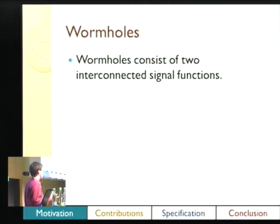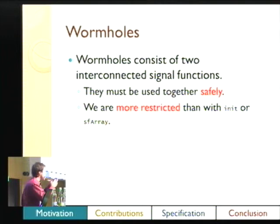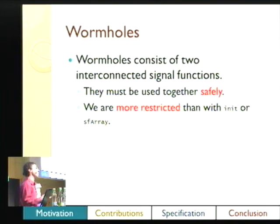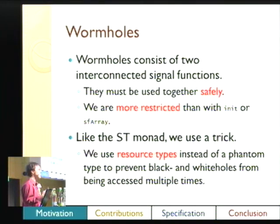Before we go further, we need to realize that wormholes are two interconnected signal functions, which makes them more complicated than `init` itself. They have to be used together safely. We're more restricted — you can't just have a wormhole with a stream coming out at either end; you actually have two things, and you can only use them once in any part of your program. Just like the ST monad has its phantom types, we're going to use resource types. You can make a white hole and a black hole that are connected, and you can be sure their event streams are unique.